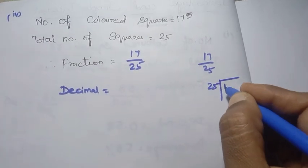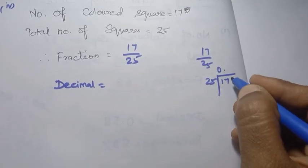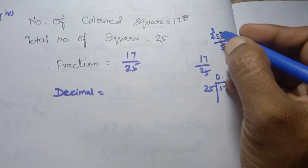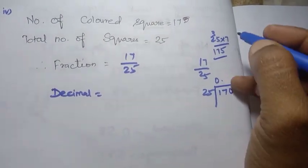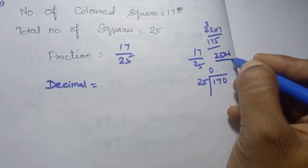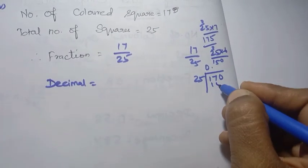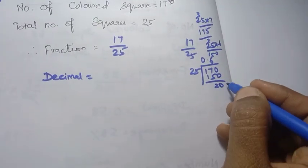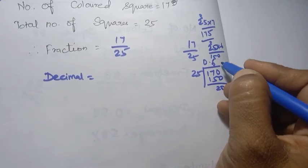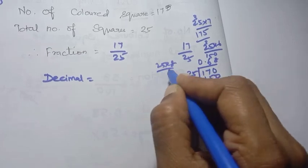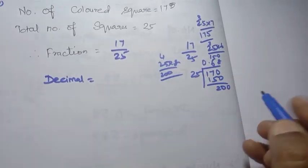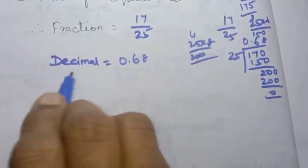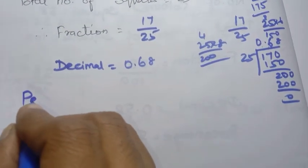Dividing 17 by 25: 25 doesn't go into 17, so we use 170. 25 × 6 = 150, remainder 20. Bring down: 200. 25 × 8 = 200, remainder 0. So decimal = 0.68.